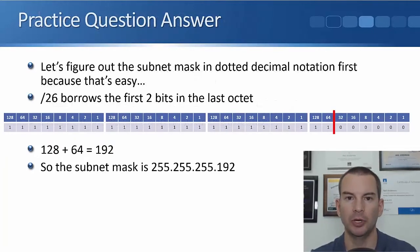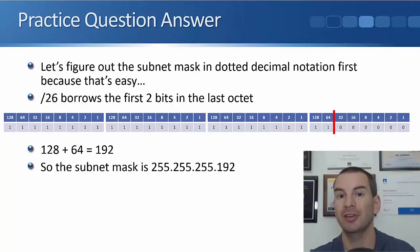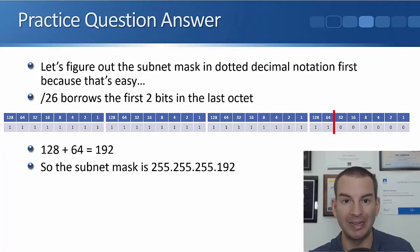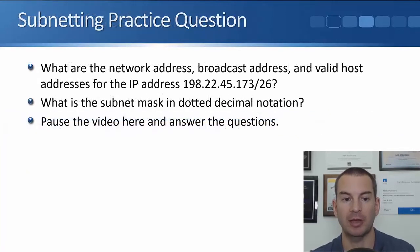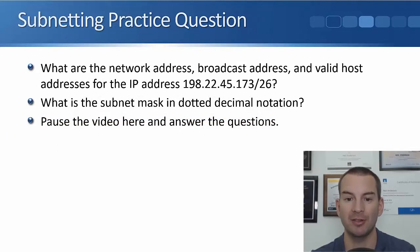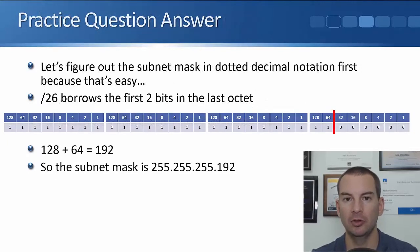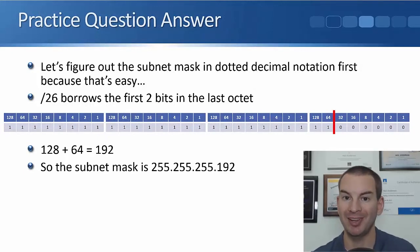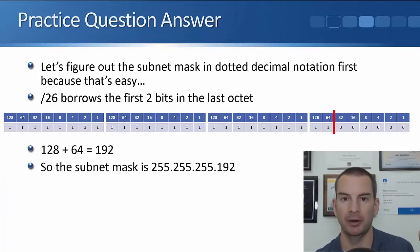Let's look at how we are going to figure out the answer. We're actually going to do the second part of the question first because it's more logical and easier to do it that way. The second part was: what is the subnet mask /26 in dotted decimal? Whenever you're working out a subnetting problem, particularly at the start, write out the bit pattern at the top of a piece of paper.